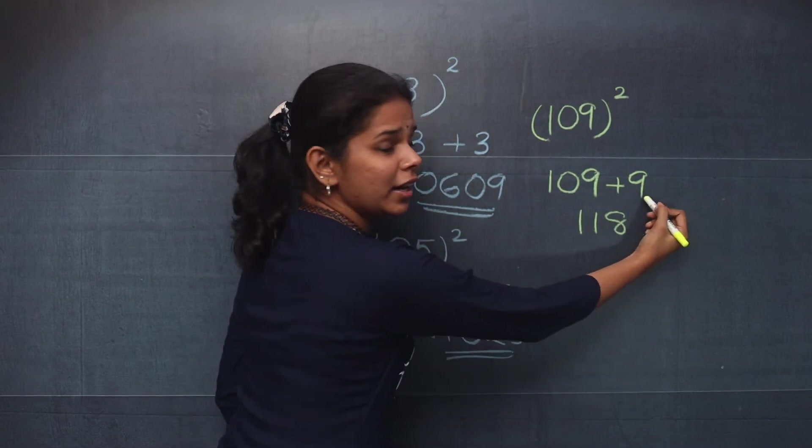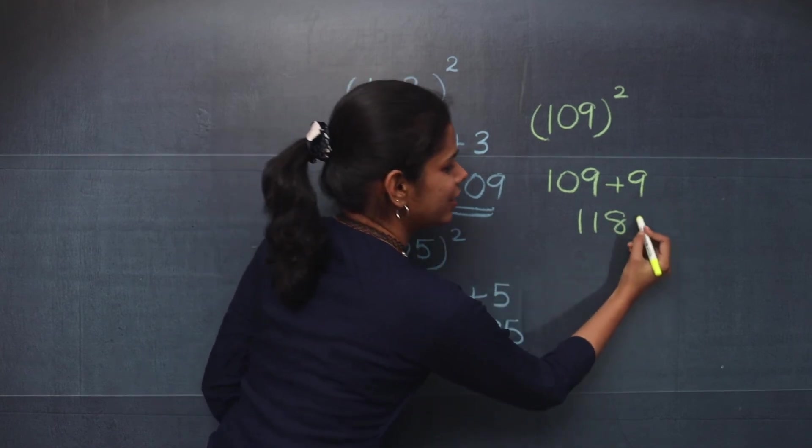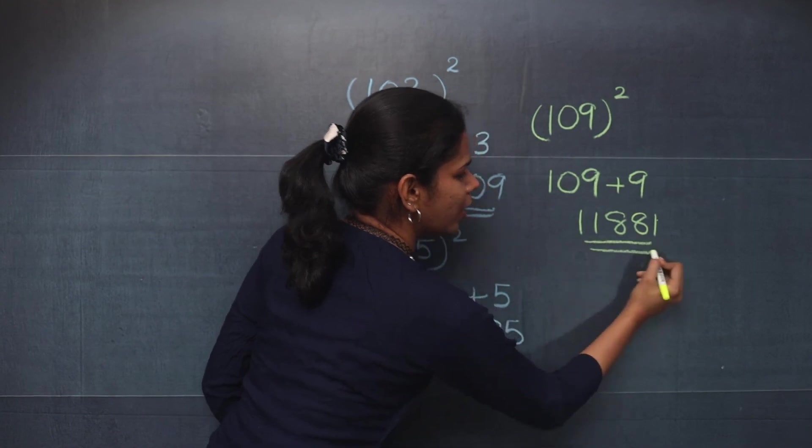And you will take the square of 9. And that is 81. So this becomes your answer. I hope this trick was useful for everyone. Stay tuned for more videos. Till then, bye and thanks for watching.